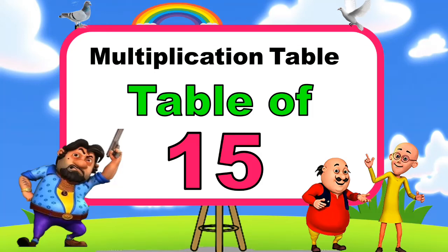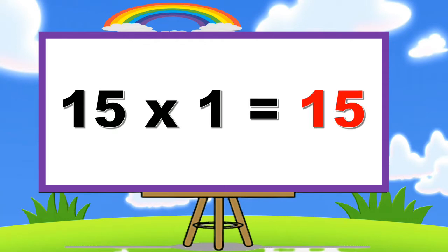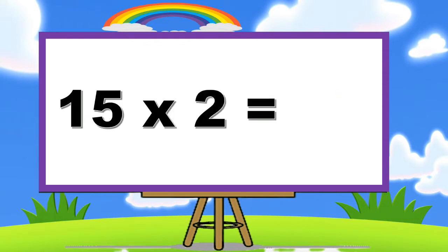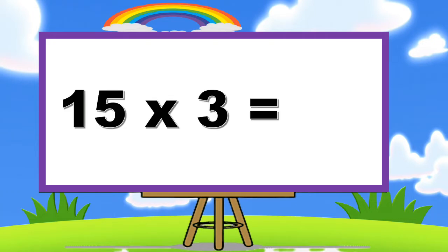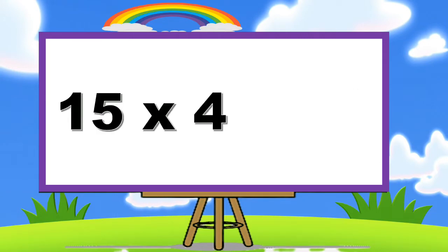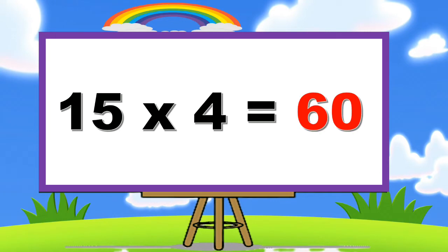Table of Fifteen. Fifteen ones are fifteen. Fifteen two's are thirty. Fifteen three's are forty-five. Fifteen four's are sixty.